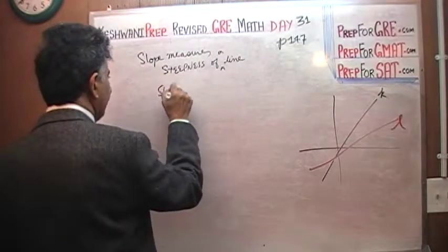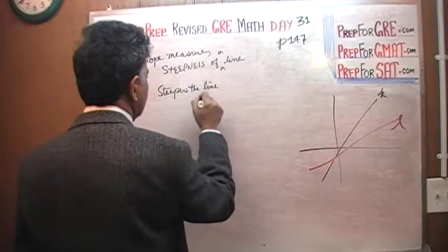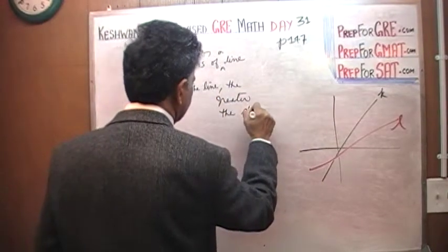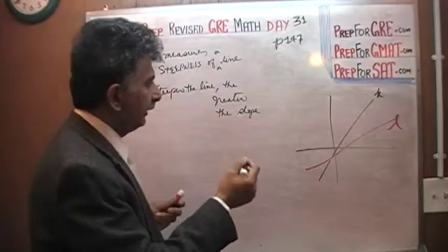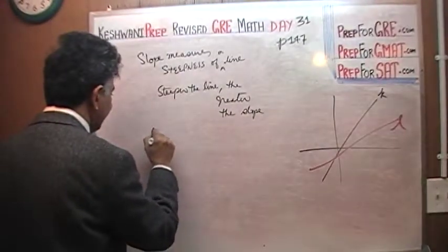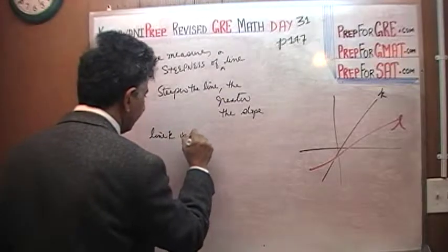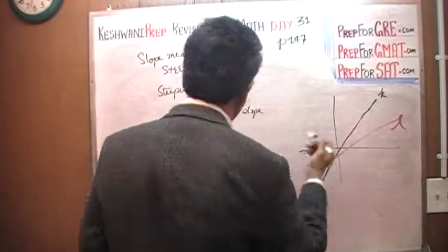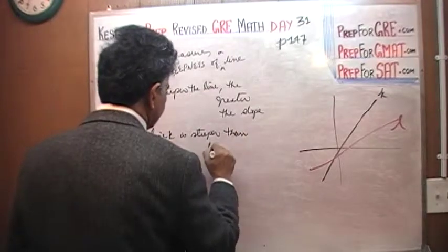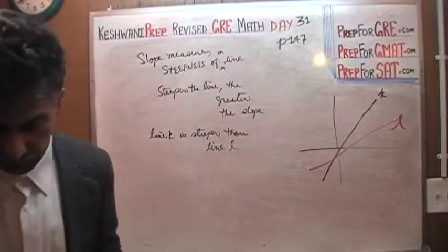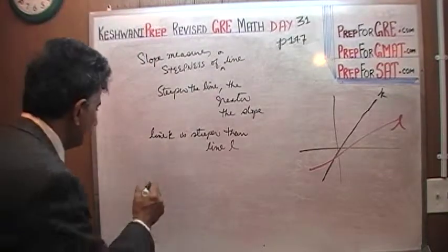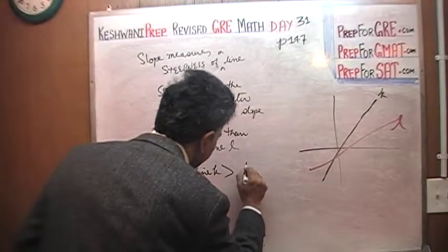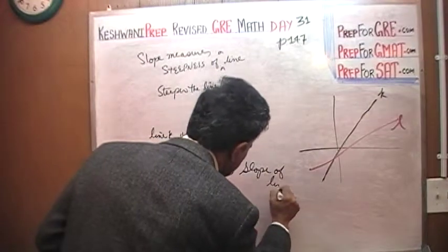The steeper the line, the greater the slope. So here, as you can see, line K is steeper — you can clearly see it's steeper than the red line, line L. Therefore, the slope of line K is greater than the slope of line L.